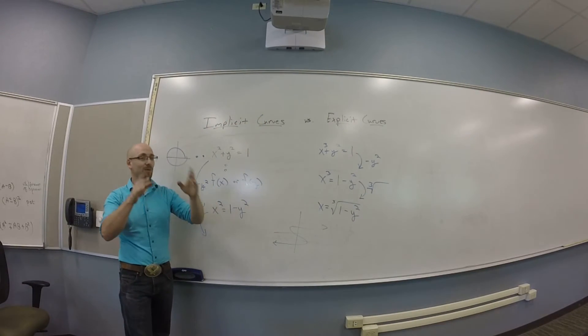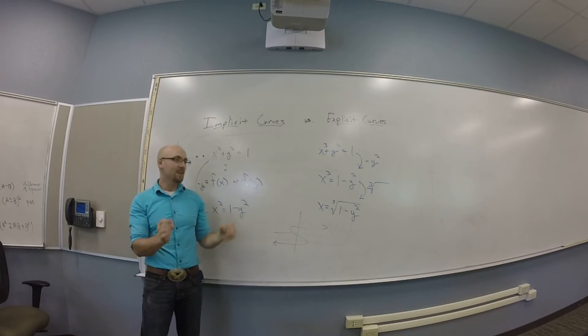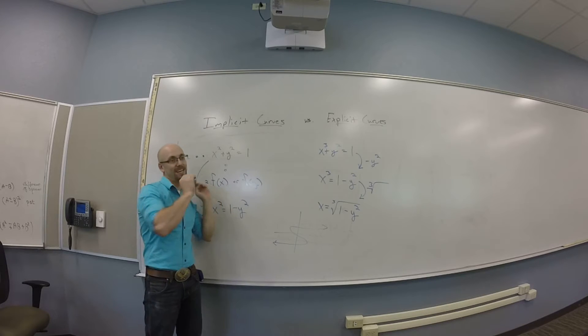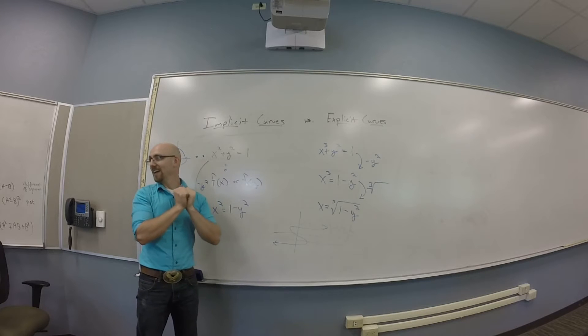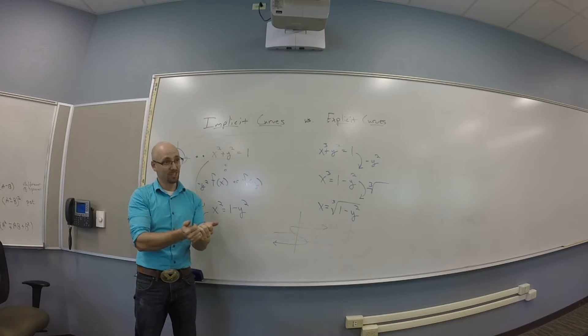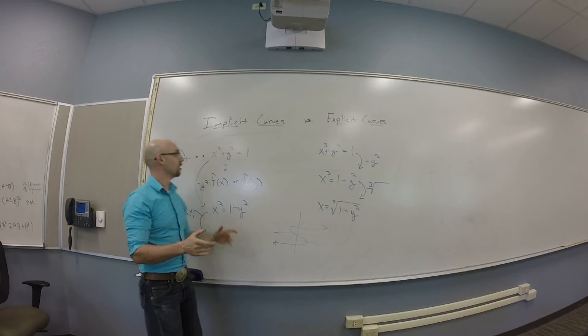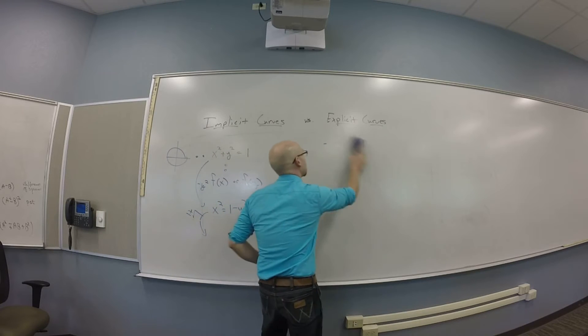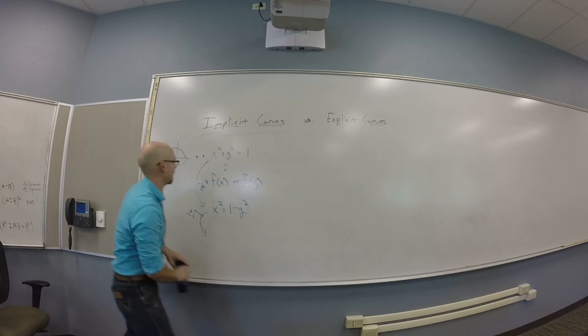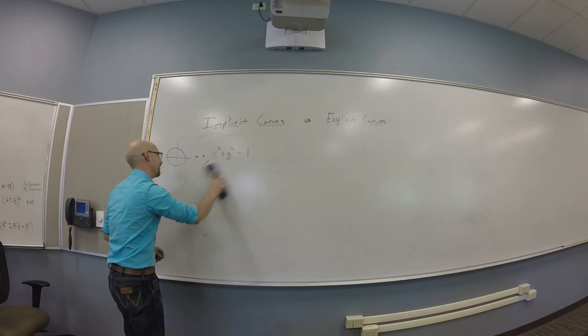Dave asks a very reasonable question, which is can you get away with explicitizing an implicit function? And yeah, sometimes. So it depends on what you're doing. But for instance, with our circle, if you multiply the implicit one by x, you have to solve it.